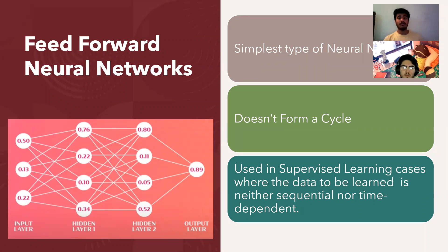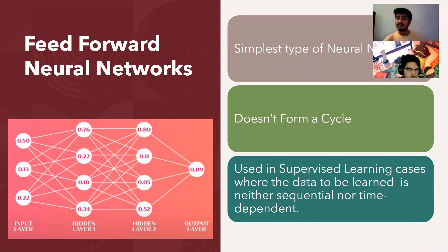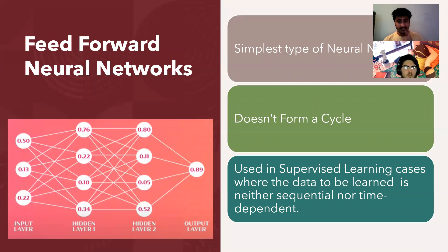Let's look at types of neural networks. Feed-forward neural networks are the same kind we've been talking about — the simplest kind. Data flows in one direction and doesn't form a cycle. They're mostly used in supervised learning cases where data is to be learned and is neither sequential nor dependent.